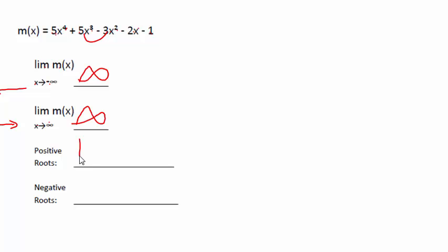So Descartes' rule ties the number of possible positive roots and the number of possible negative roots to the function sign changes. Actually, the negative roots come from counting sign changes in m of negative x, meaning we're going to plug a negative x in here, here, here, and here, and we're going to rewrite the function.